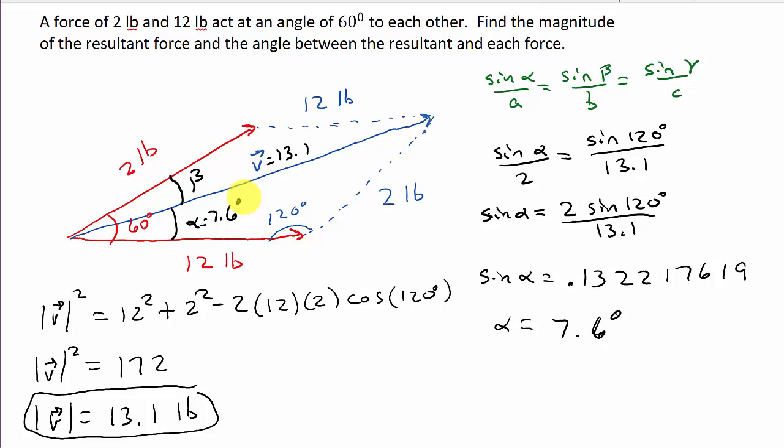All right. Now look. We could do the exact same thing for beta. We could use the law of sines. But I know this entire angle here is 60 degrees. So that means beta would have to be what? 60 minus the 7.6. And so 60 minus 7.6, that's going to give me 52.4 degrees. So there's angle beta. There's angle alpha. This is 52.4 degrees.